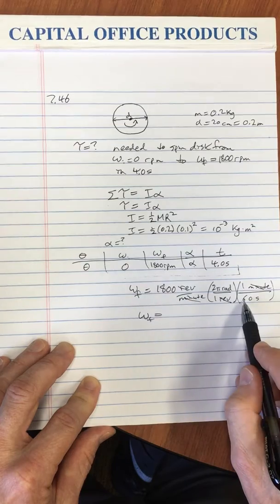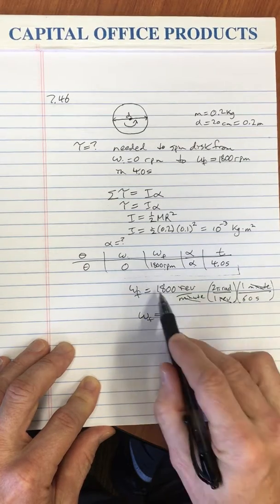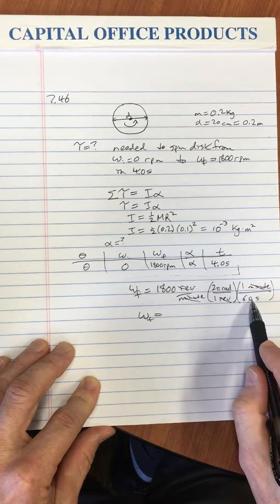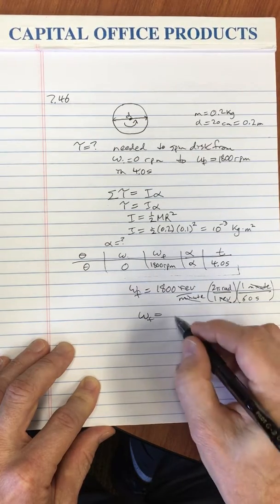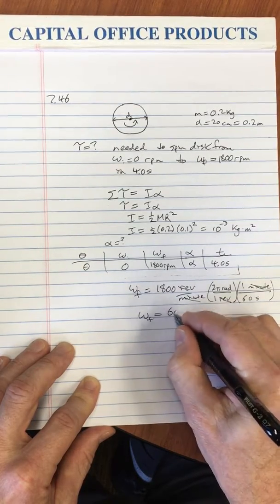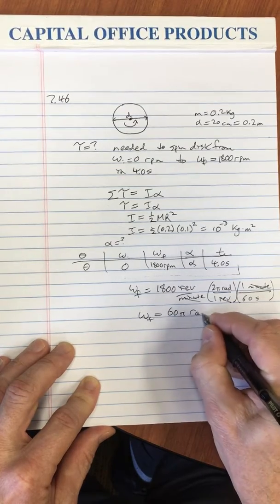Well, 18 over 6 is 3, so that's 300 over 10, which is 30 times 2 pi, which is 60 pi radians per second.